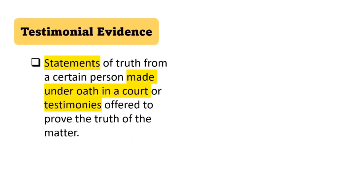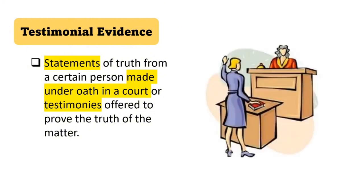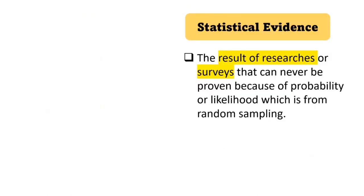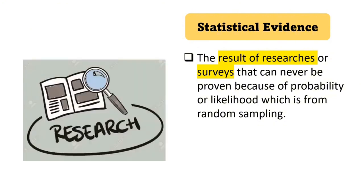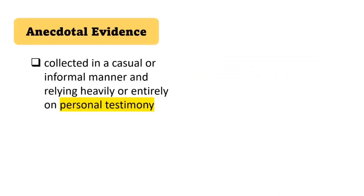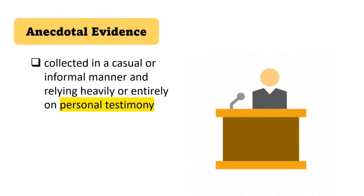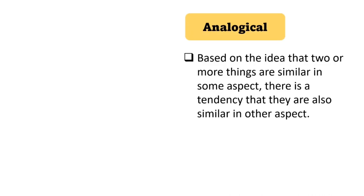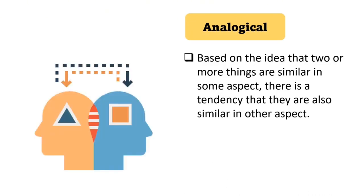Testimonial evidence — these are statements of truth from a certain person made under oath in a court, or testimonies offered to prove the truth of the matter. Statistical evidence — these are the results of researches or surveys that can never be fully proven because of probability or likelihood, which is from random sampling. Anecdotal evidence — these are collected in a casual or informal manner, relying heavily or entirely on personal testimony. Analogical evidence is a specific way of thinking based on the idea that two or more things are similar in some aspects, and that there is a tendency they are also similar in other aspects.